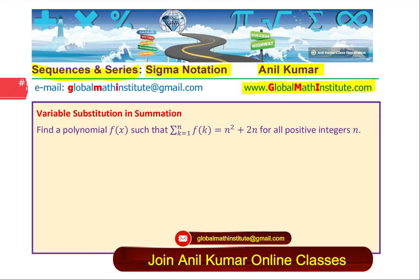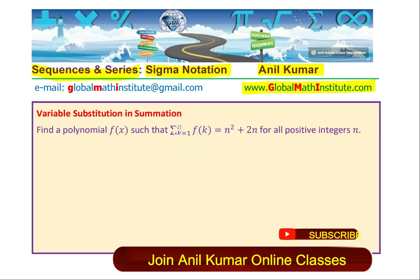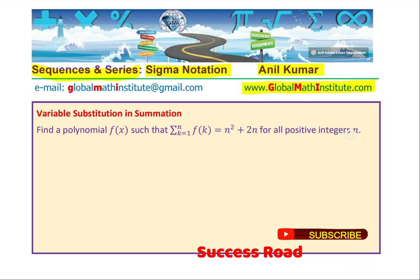The question here is: find the polynomial f such that the sum of f(k), where k goes from 1 to n, is equal to n² + 2n for all positive integers n.